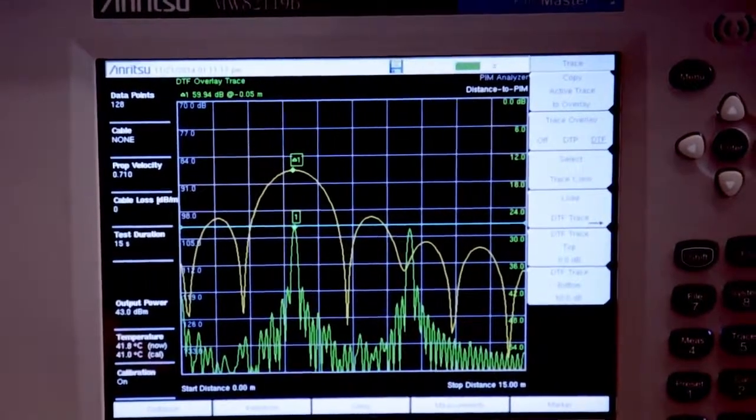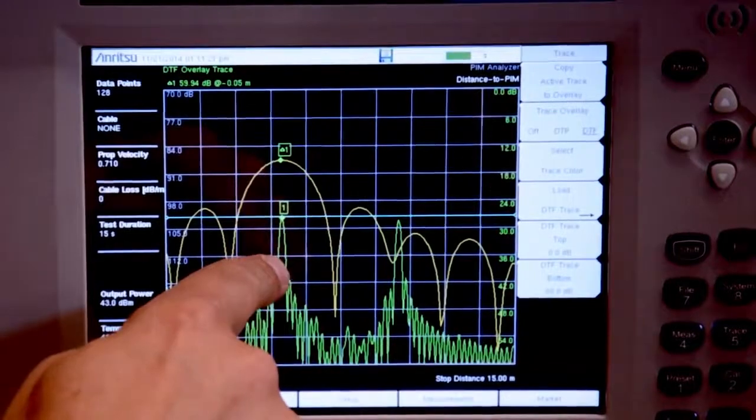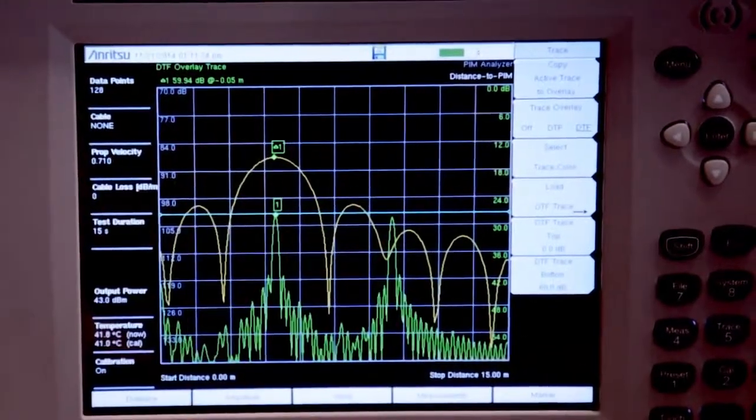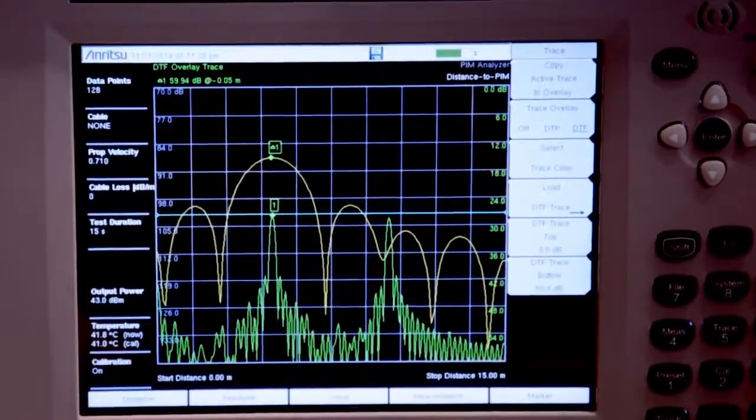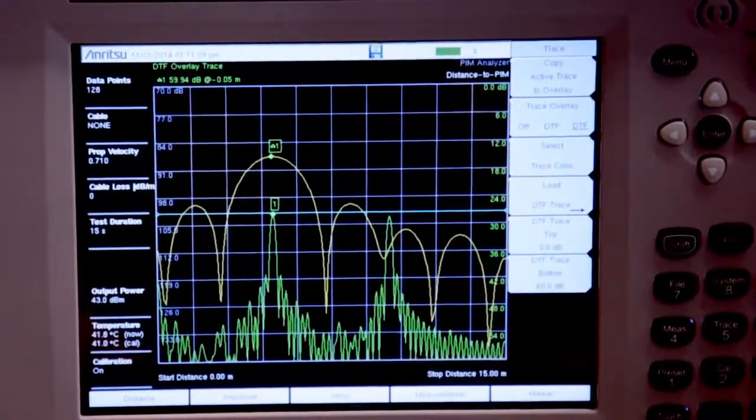And here we can see the input connector to the system, that connector at 5 meters, and the connector at the end. And without even caring what the numbers are at the top, we know that that connection at the middle is where our PIM problem is located.